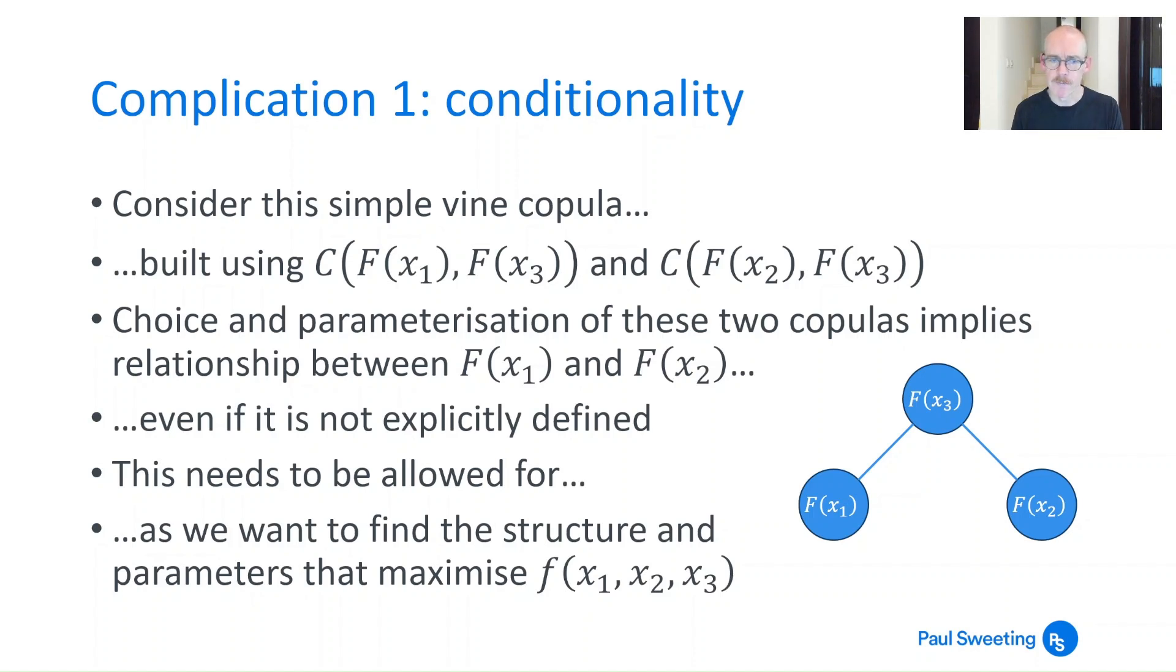But whatever you choose, it does imply a relationship between F(x₁) and F(x₂) even if you're not explicitly defining that relationship at the outset. This needs to be allowed for because what we'd ideally like to do when we're looking at the structure and the parameters is find those that maximize f(x₁, x₂, x₃) which is the joint density function for all of those, because essentially what you're trying to do here is find the maximum likelihood parameters that maximize the likelihood of your density functions. So f(x₁, x₂, x₃) somewhere in there as we'll see later there is an allowance for the relationship between x₁ and x₂ and that needs to be allowed for somehow even if you're not defining it explicitly.